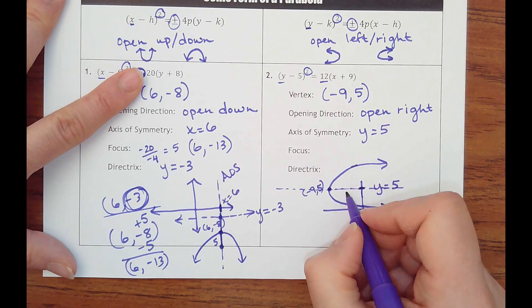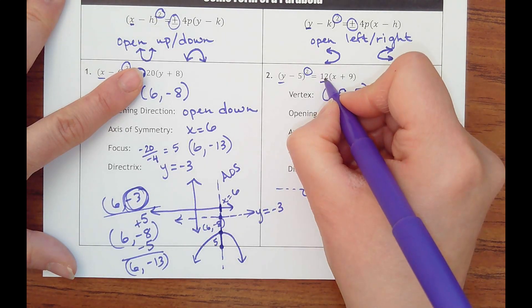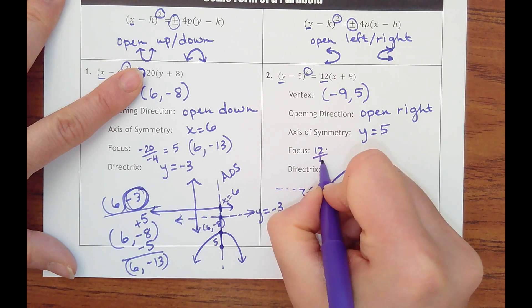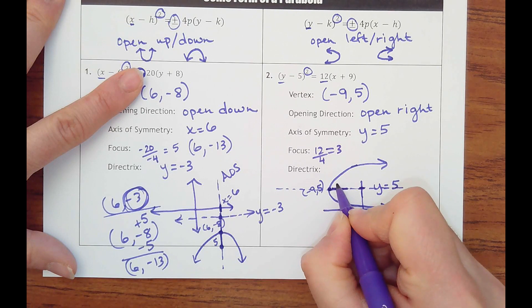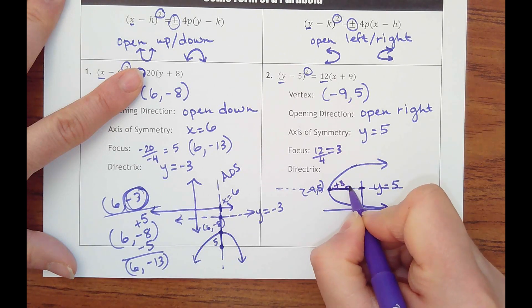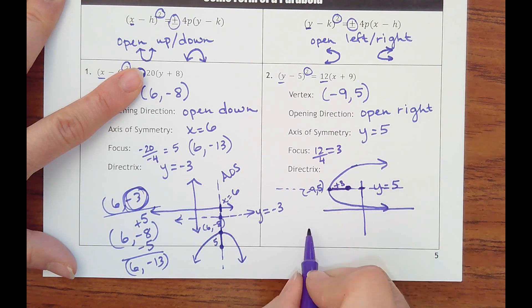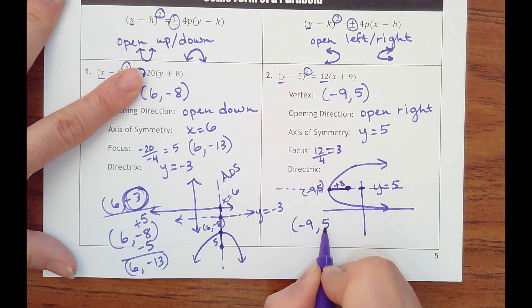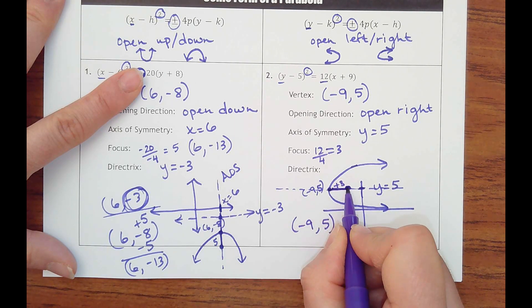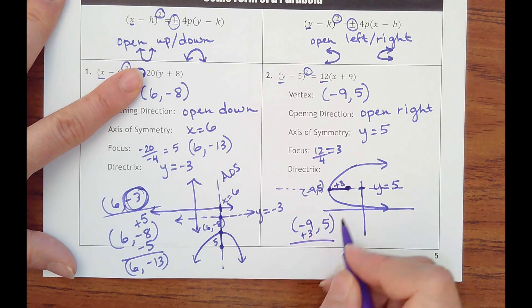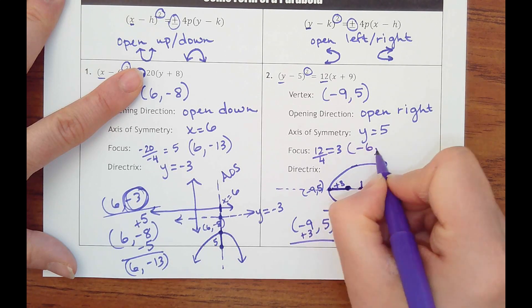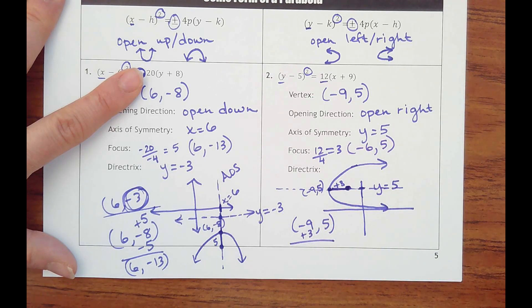And then the focus is going to be the point inside of here. We're going to take 12 divided by 4, and that's going to equal 3 units. So we're going to go in 3 units. That takes the vertex, and this time since I'm going right, I'm going to change the x value. So I need to add 3. That would get me negative 6, comma 5. The y value doesn't change.